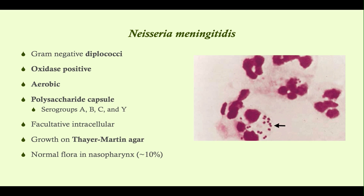The characteristics of Neisseria meningitidis — what does it share in common with Neisseria gonorrhea? They're both gram negative diplococci, both oxidase positive, both aerobic, both grow inside cells, and both grow on Thayer-Martin agar. Thayer-Martin agar is selective for Neisseria, so if you're trying to grow Neisseria in the lab, use Thayer-Martin agar.